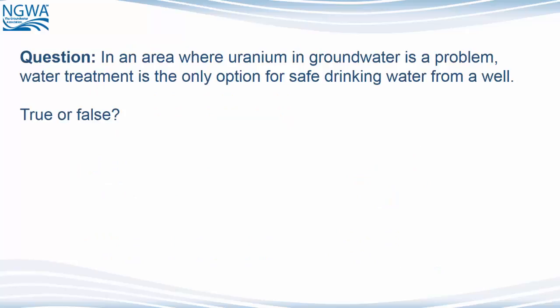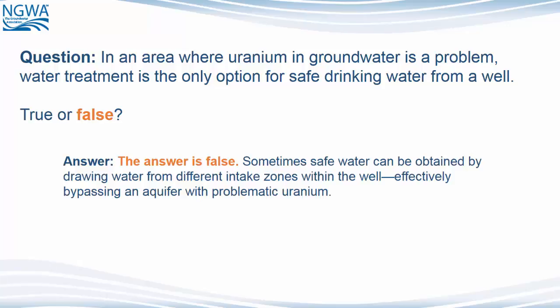Question: In an area where uranium in groundwater is a problem, water treatment is the only option for safe drinking water from a well. True or false? The answer is false. Sometimes safe water can be obtained by drawing water from different intake zones within the well, effectively bypassing an aquifer with problematic uranium.